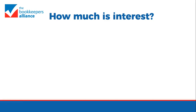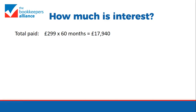So how much is the interest? First, we need to work out how much Ryan is going to pay in total. He pays £299 a month for 60 months, so he pays £17,940. He's also paid that £2,000 deposit.